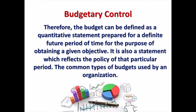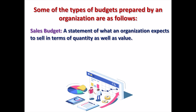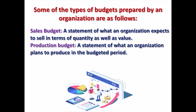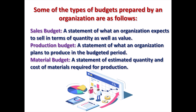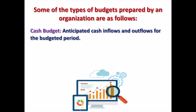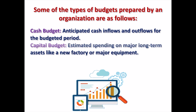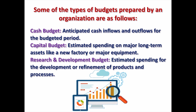The common types of budget used by an organization are: sales budget — a statement of what an organization expects to sell in terms of quantity and value; production budget — a statement of what an organization plans to produce in the budgeted period; material budget — a statement of estimated quantity and cost of materials required for production; cash budget; capital budget — estimated spending on major long-term assets like a new factory or major equipment; and R&D budget — estimated spending for the development or refinement of products and processes.